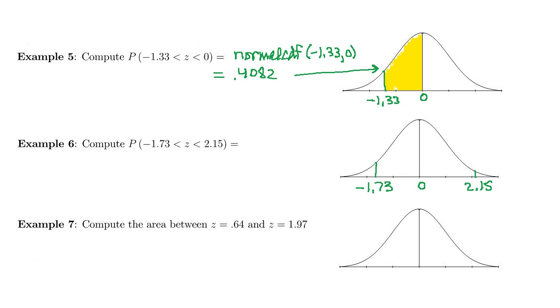So now we want that area. We're going to use normal CDF again. Our lower cutoff is going to be negative 1.73, the upper 2.15, and by default mean and standard deviation are 0 and 1.